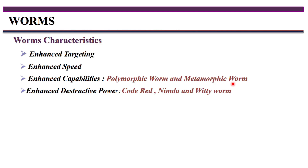A metamorphic worm takes multiple versions of the same worm. These versions contain spurious instructions to confuse detection software. When a particular worm version is detected by antivirus software, the attacker releases a higher version with additional suspicious instructions that confuses the detection software. This version updating to confuse detection software is what defines a metamorphic worm.